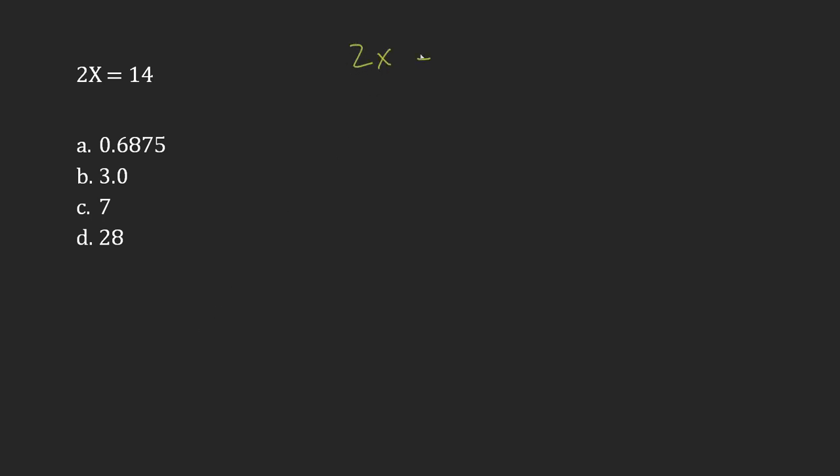If I'm trying to isolate x, what I've said in previous videos is that you need to undo what's being done. Here I'm doubling x, or I'm doing 2 multiplied by x.